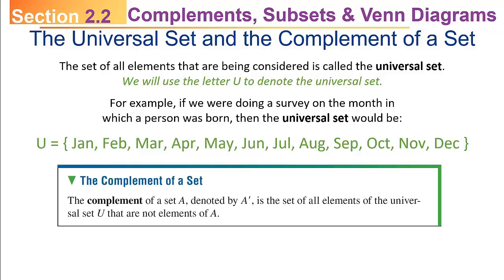The complement of a set A, denoted by A with an accent symbol as a superscript, is the set of all elements of the universal set U that are not elements of A. So you can't define the complement of a set until you know what the universal set is.